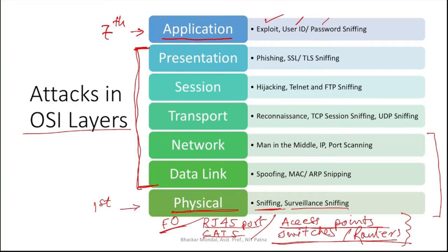In the data link layer, attacks include spoofing — such as MAC or ARP spoofing — and sniffing. MAC address or ARP packets can all be sniffed at the data link layer if someone is mounting an attack there.